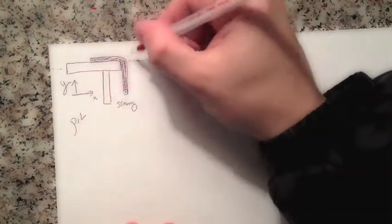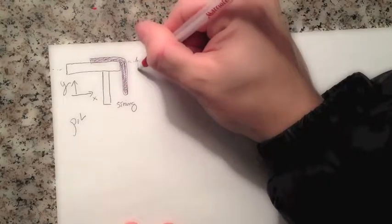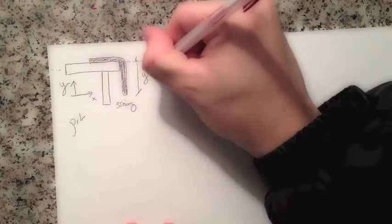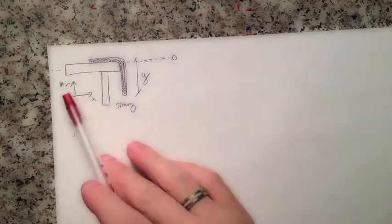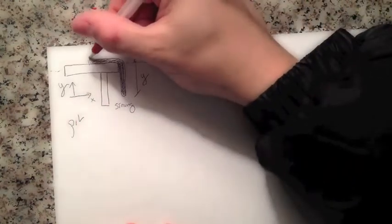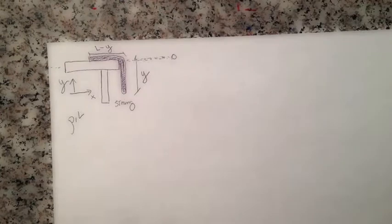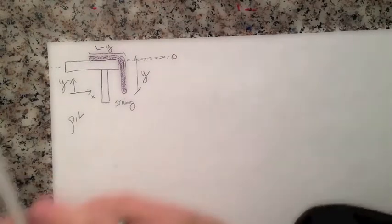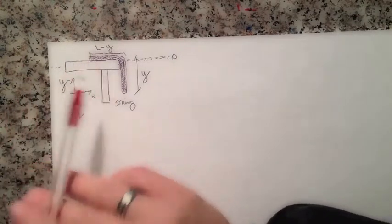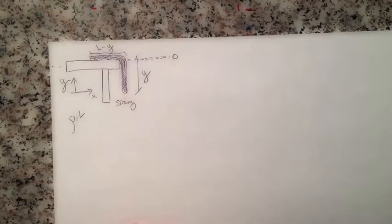If the total length is L, and we call the hanging length Y — just because it's in the Y direction — then the part remaining on the table is going to be nothing but L minus Y. It's very important to note that we are not considering friction forces in this problem. The string is going to slide over the table with no friction, with no forces due to the surface.